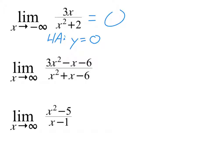For the second one, same kind of idea. In this case, it is balanced because the highest exponent terms are both squares — top and bottom have the same degree. Since it is balanced, I have to do the a over b thing: a being the coefficient of the highest degree term, so that's the 3 on the top, and on the bottom, that coefficient is 1. So it's 3 over 1, and the limit as x approaches infinity equals 3, because that's where the horizontal asymptote is.